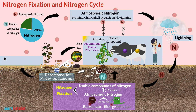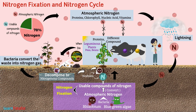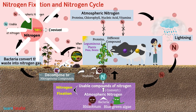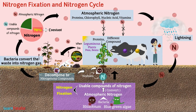Certain other bacteria convert the waste into nitrogen gas, which goes back into the atmosphere. In this way, the percentage of nitrogen in the atmosphere remains nearly constant, i.e., 78%. I hope you have understood this topic very well. Thank you for watching this video.